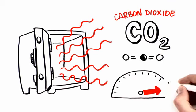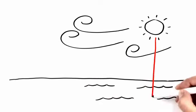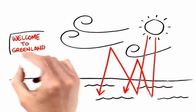It throws the natural balance out of whack. The more carbon dioxide in the atmosphere, the more heat that is trapped, and the warmer it gets.